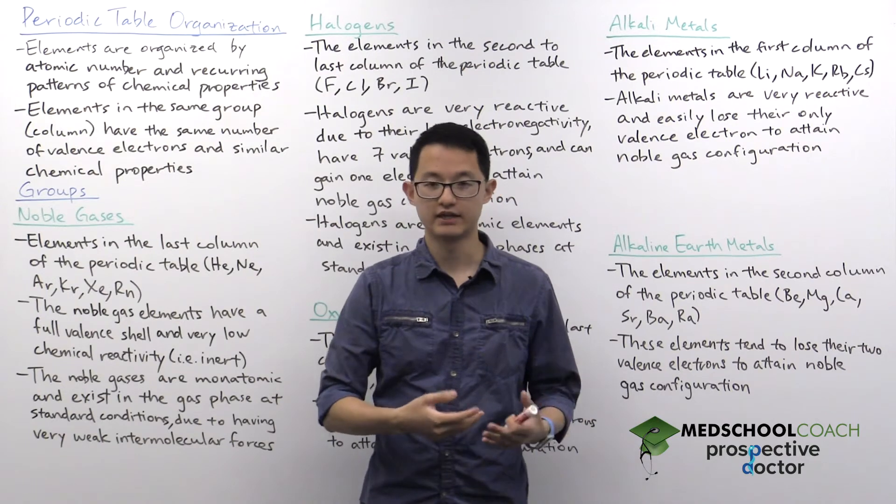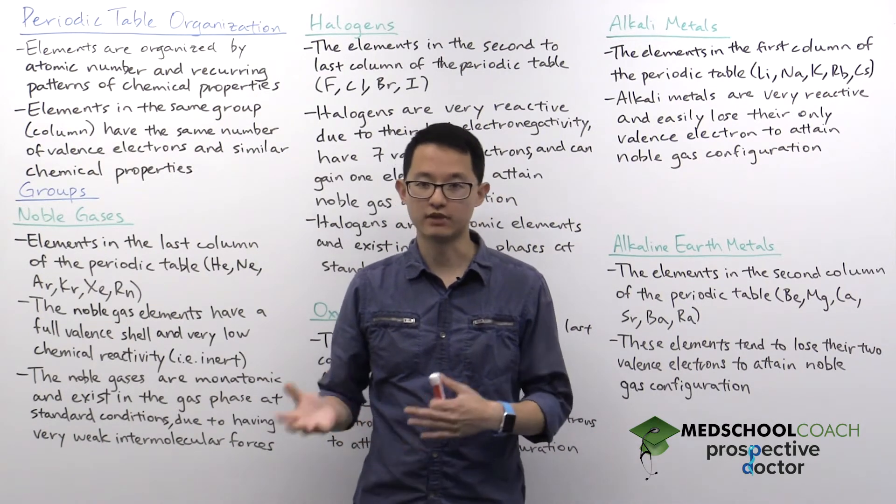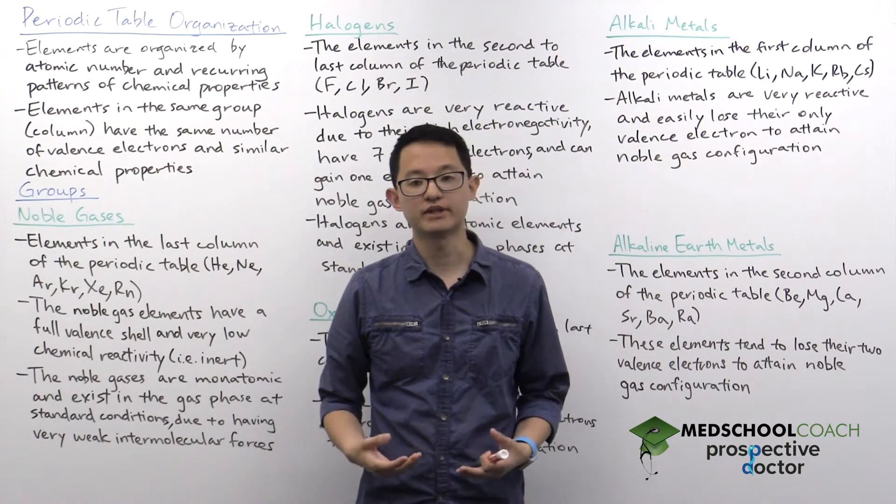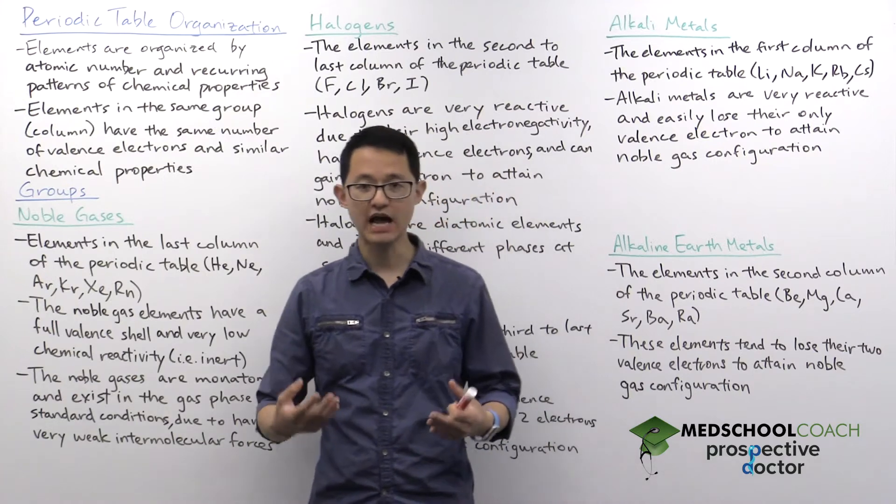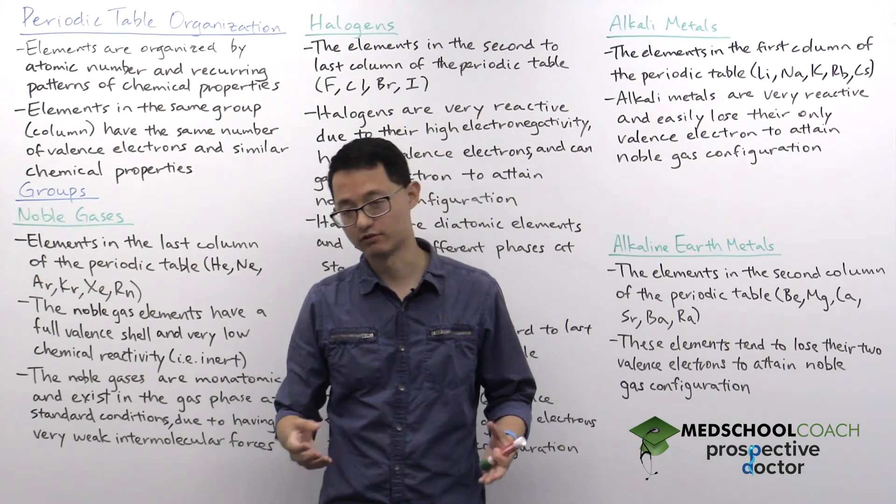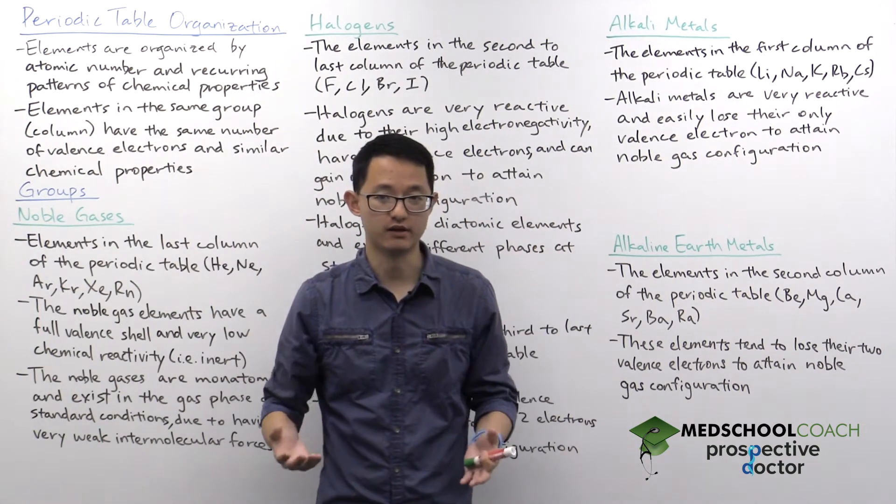On the top left, you've got hydrogen with an atomic number of one, and you work your way from left to right and from top to bottom along the periodic table, the atomic number increases. However, there is more organization than that, because if you're just going to rank by atomic number, you could just have one giant column, right?